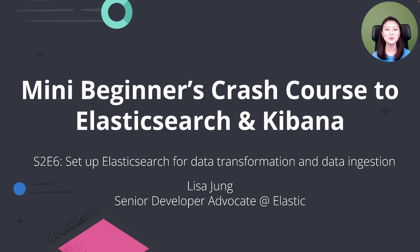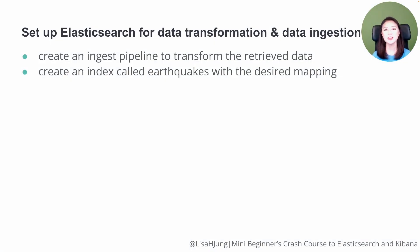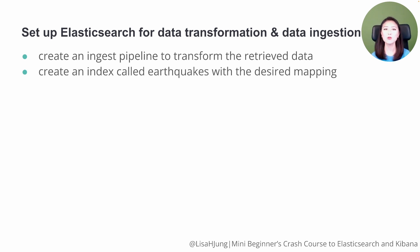In Season 2, we're building a full-stack JavaScript app that could search for earthquake data stored in Elasticsearch. In the previous episode, we figured out how we want to transform this data before ingesting it into Elasticsearch. We also came up with a desired mapping to efficiently store and search data. In this episode, we'll set up Elasticsearch for data transformation and data ingestion by creating an ingest pipeline and an index called earthquakes with a desired mapping.